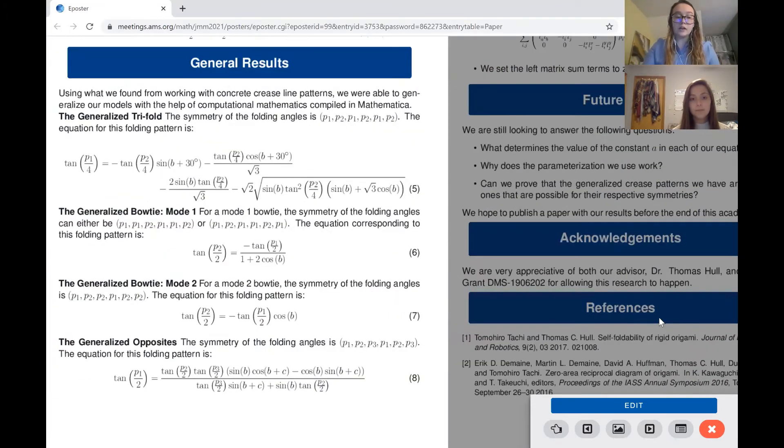The first generalized pattern we found an equation for is the generalized trifold pattern which corresponds to the leftmost crease pattern in our folding pattern section. Equation five shows that there is an algebraic relationship between p1 and p2 based on angle b, and it's pretty gross as you can see.